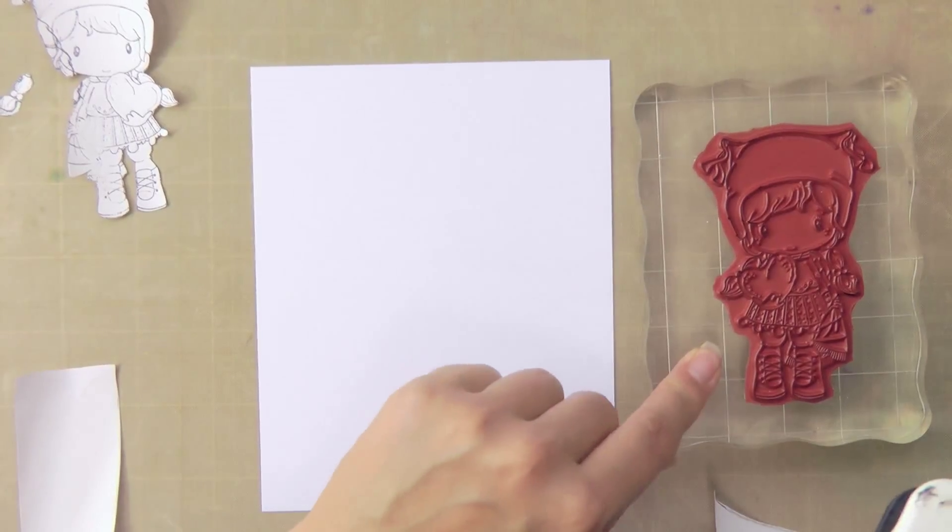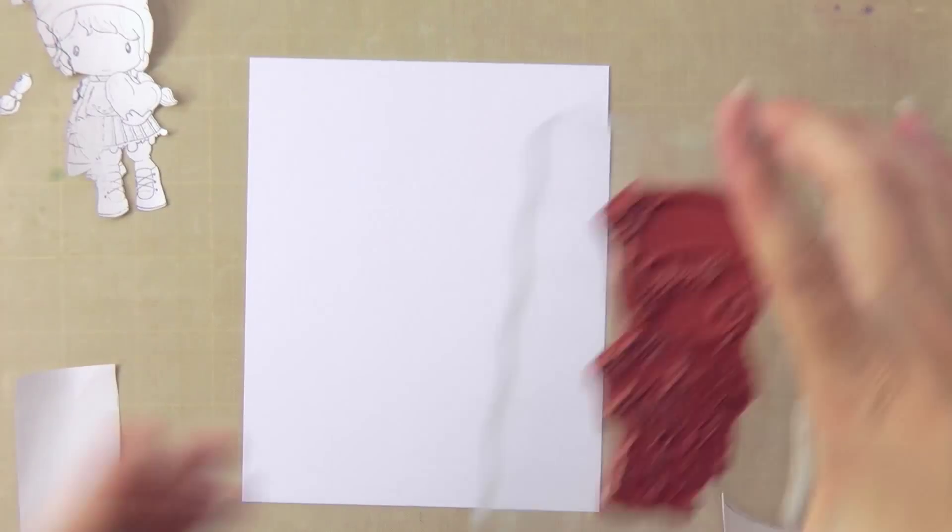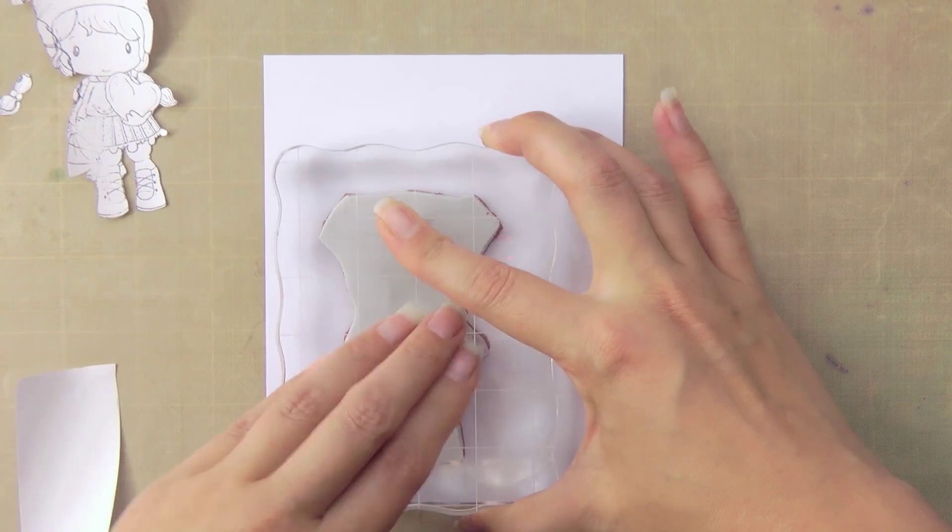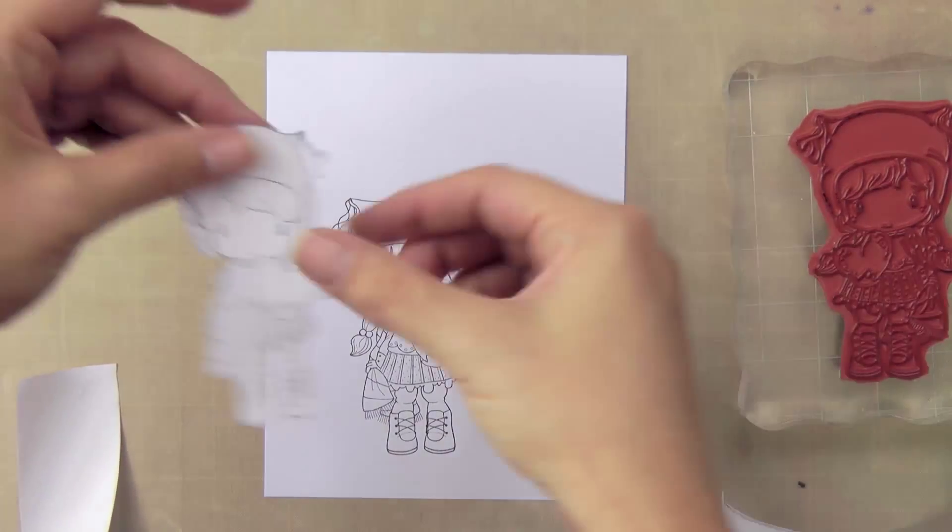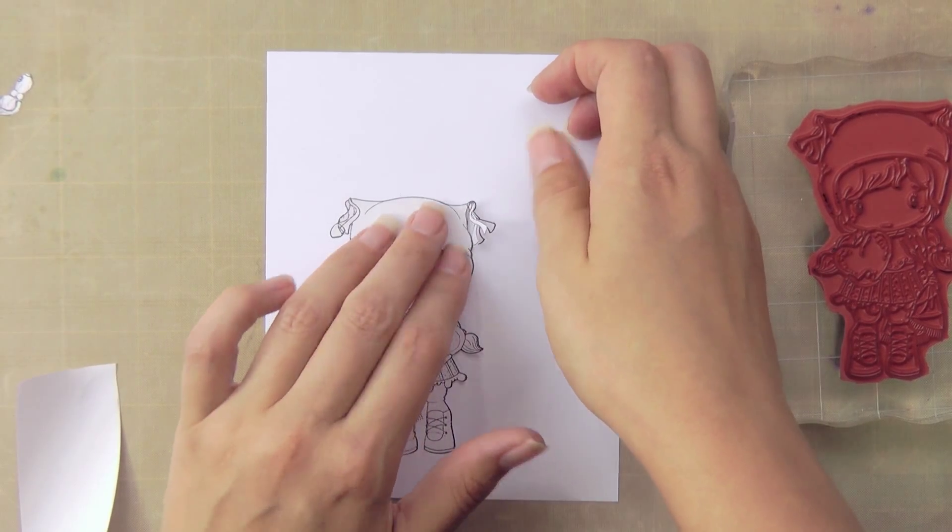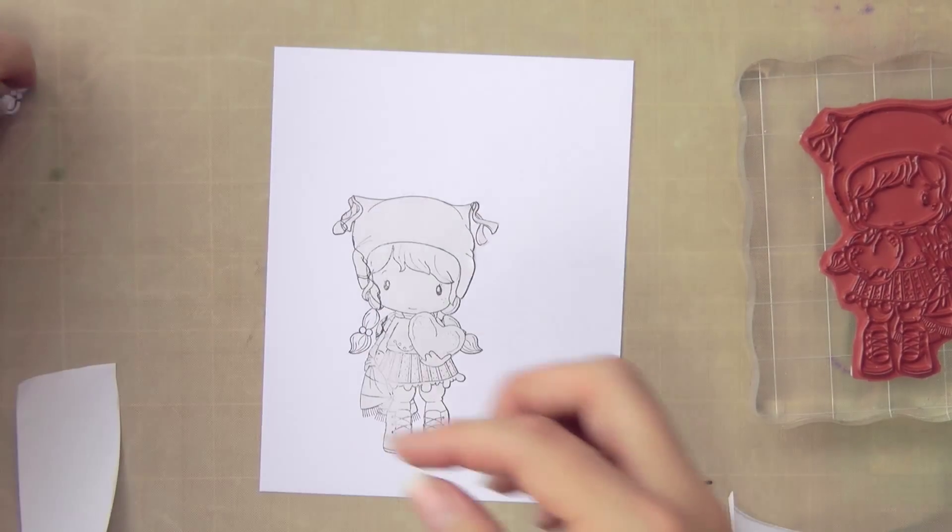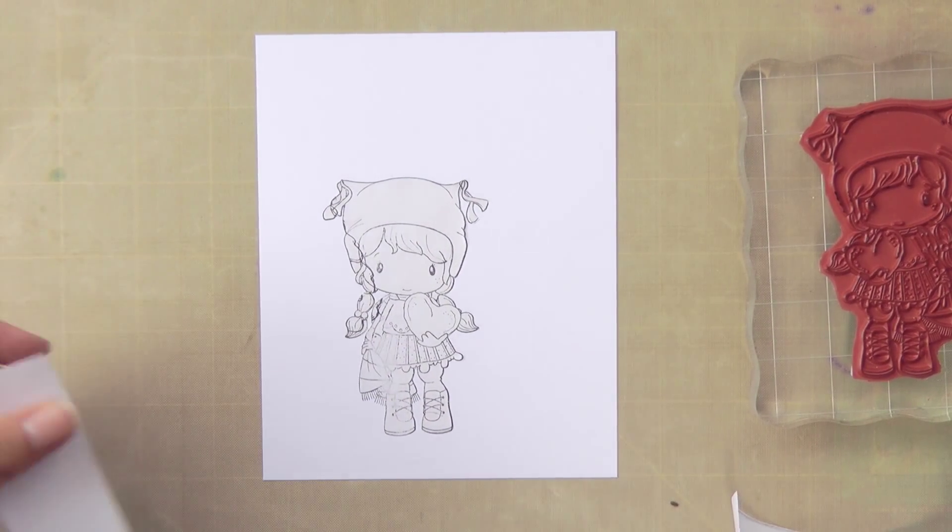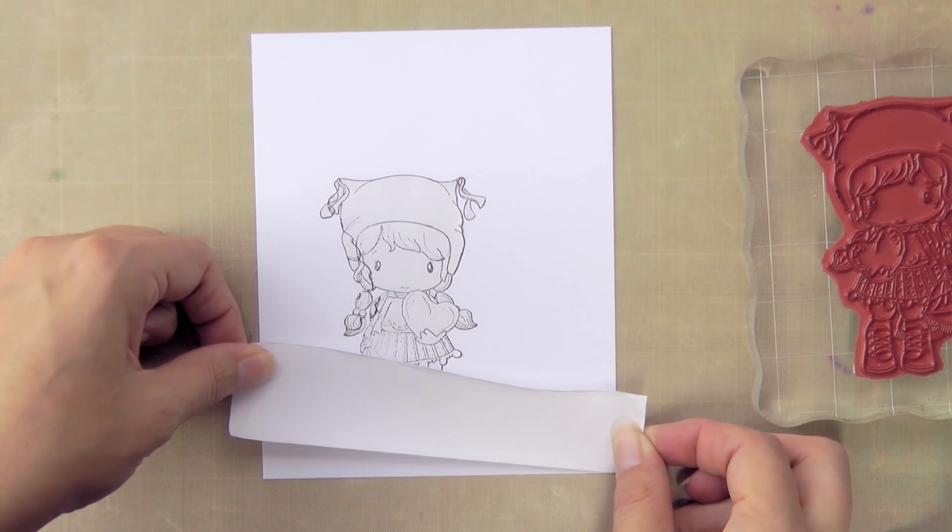So now I'm ready to start stamping the scene and I'm using Memento ink so I can use my Copics later. I start by stamping the stamp that's going to be closest to the viewer at the end. In this case that's Birgitta. I've stamped her down and I'm just putting the mask over the top of her. And then I'm going to put this first snow slope on.